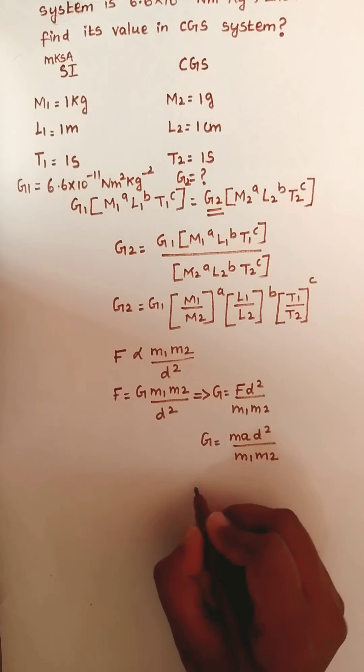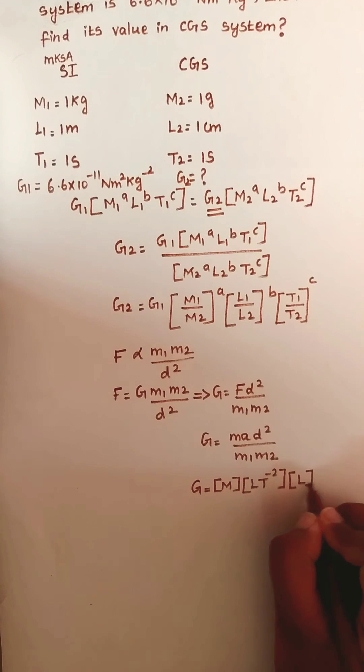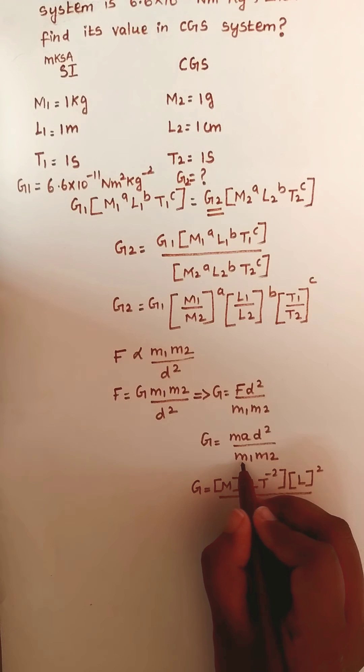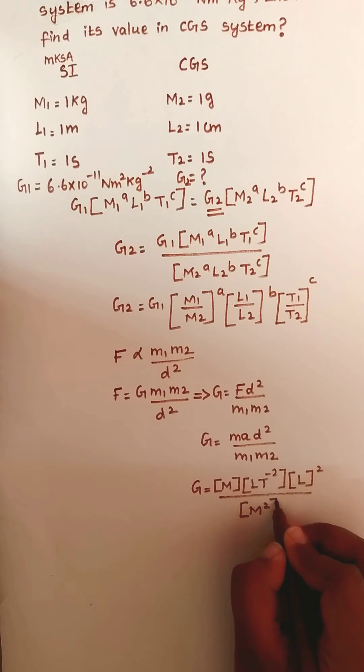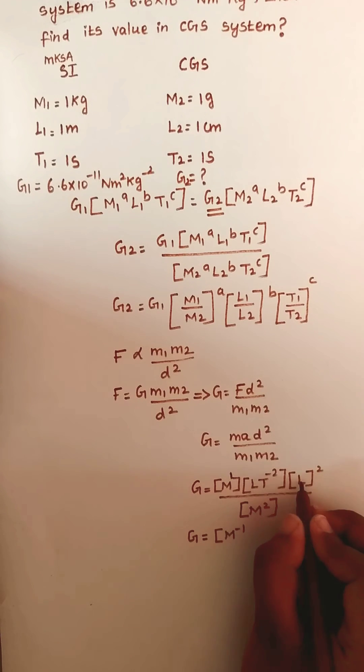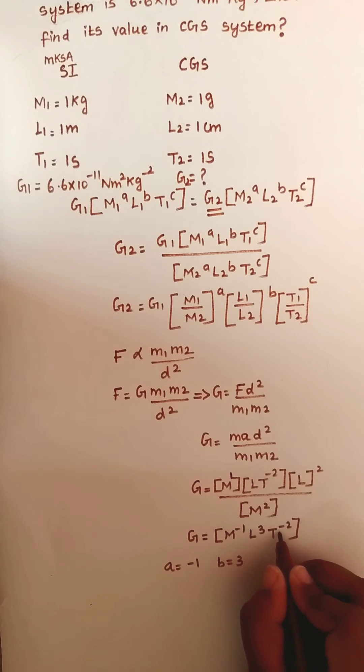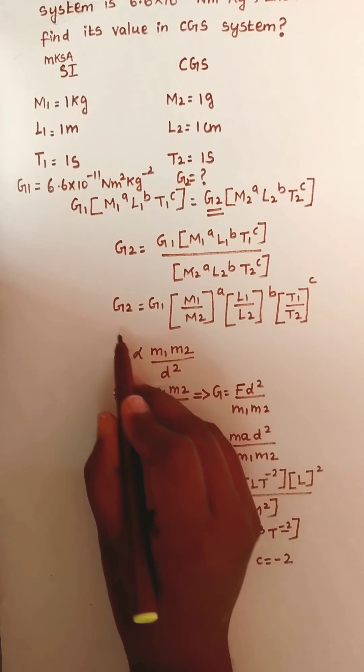We already know the dimensional formula. Dimensional formula for mass is M, for acceleration is Lt⁻², for distance is length. So we have M·Lt⁻²·L² divided by M·M. The dimensional formula becomes [M⁻¹L³T⁻²]. Take the powers: A = -1, B = 3, C = -2. Now substitute back in this equation.